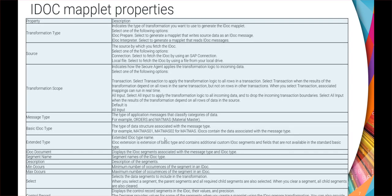These are the IDOC maplet properties. In the transformation type there are two types: IDOC prepare and IDOC interpreter. We will use the same maplet for both sending and receiving data from SAP. IDOC prepare transforms source data to a format that the SAP system understands — it is used for writing to SAP. In this video we focus on the IDOC interpreter, which translates the IDOC to a format that the target system understands. The source field defines what we use to generate this IDOC maplet, and the transformation scope indicates how the secure agent applies transformation logic to incoming data.